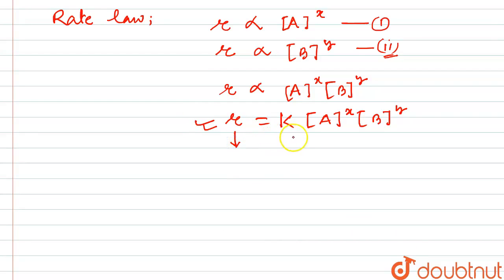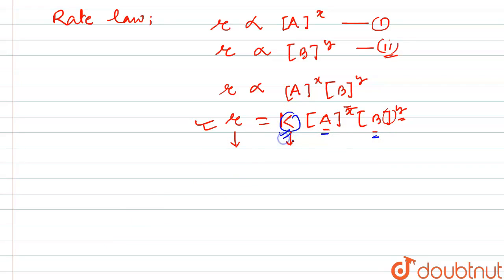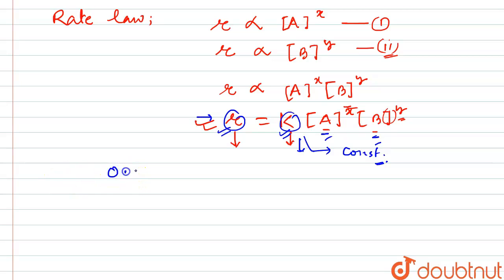This is the rate of the reaction, K is the rate constant, and [A] and [B] are the concentrations. X and Y are used to calculate the order of reaction. One important thing: when the concentration of A and B changes, the value of K doesn't change, because K is independent of concentration. The value of rate of reaction will vary according to the concentrations. K is a constant value for every reaction. The question states that the rate of reaction is 0.3 when the concentration of A is A and B is B.